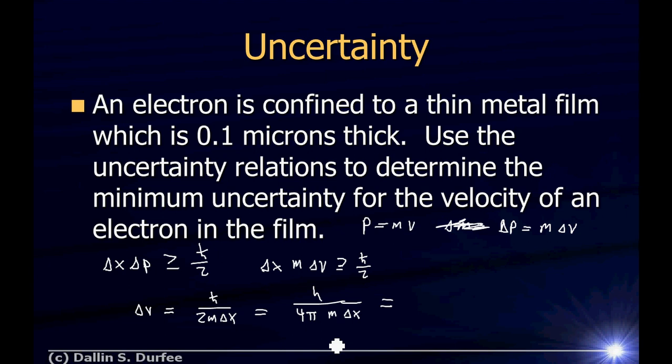Checking units: h has units of kilogram meter squared per second; dividing by mass in kilograms and position in meters gives meters per second — the right units for velocity. That's a good sign we haven't made a mistake. You can plug in the numbers and get the answer. You should find a velocity much less than the speed of light. If you find one approaching or greater than the speed of light, then you've made bad assumptions — you'd need to go back and work the problem with relativity, which is a lot harder.